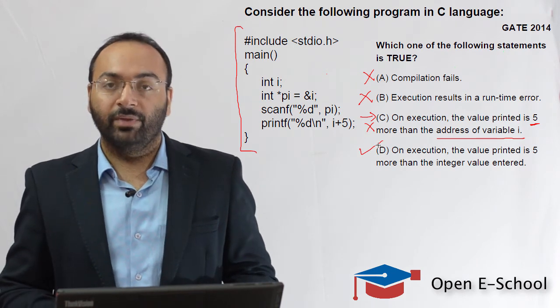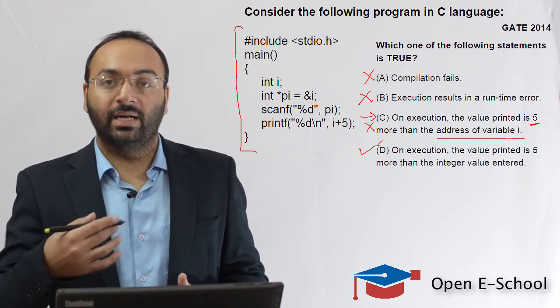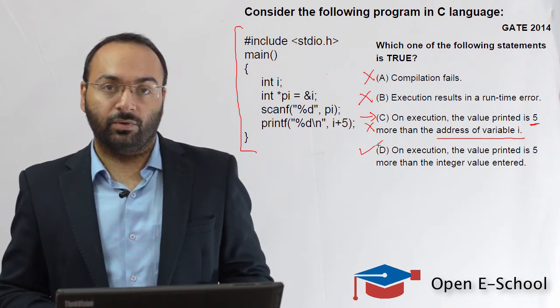So the last statement is true that on execution, the value printed is 5 more than the integer value that is entered through the keyboard. So D is the right answer for this question.